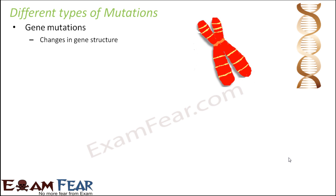When we talk about gene mutations, these are mutations which take place due to some changes in the gene structure. Here the chromosome is the same — there is no change in the structure or number of chromosomes. But the genes present in the chromosome undergo some change, which can be in the form of a mismatch in the sequence of bases. Whenever there is a change in gene structure, protein synthesis gets affected, the trait gets affected, and the mutation is seen.